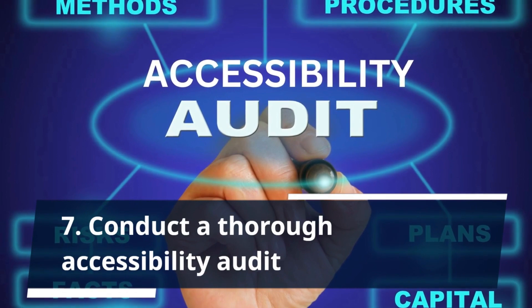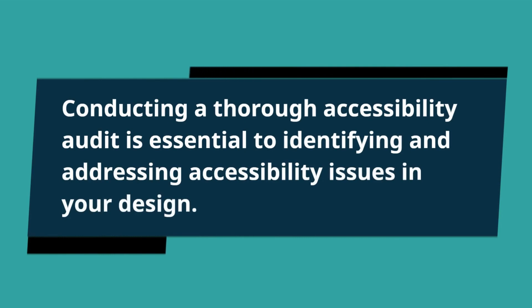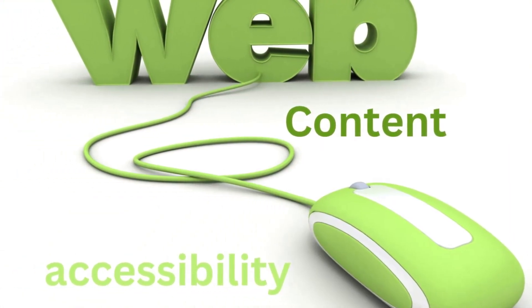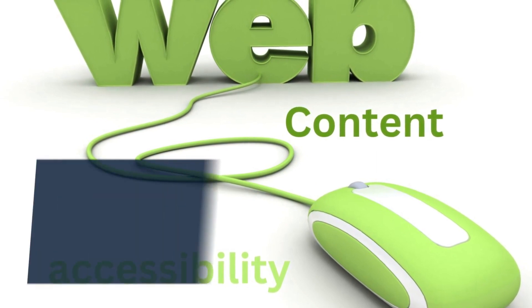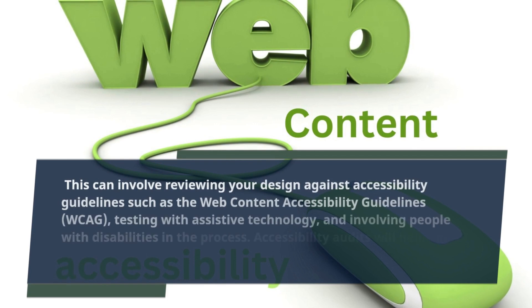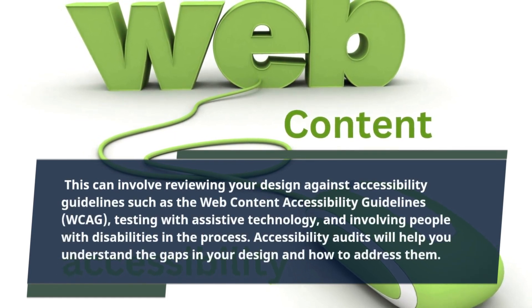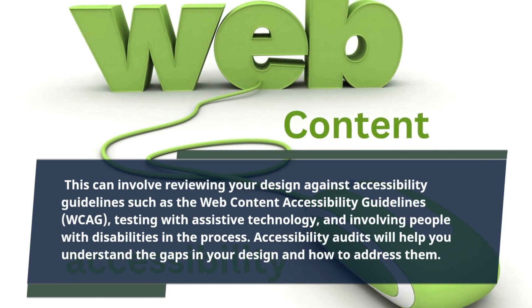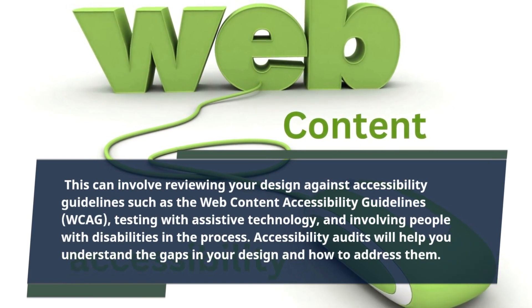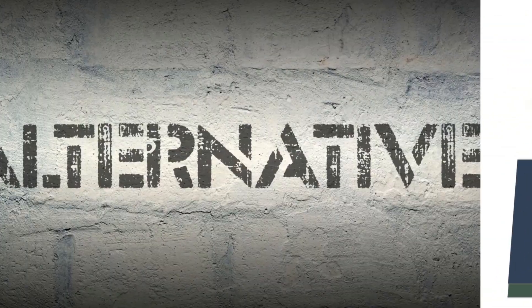Tip 7: Conduct a Thorough Accessibility Audit. Conducting a thorough accessibility audit is essential to identifying and addressing accessibility issues in your design. This can involve reviewing your design against accessibility guidelines such as the Web Content Accessibility Guidelines (WCAG), testing with assistive technology, and involving people with disabilities in the process. Accessibility audits will help you understand the gaps in your design and how to address them.